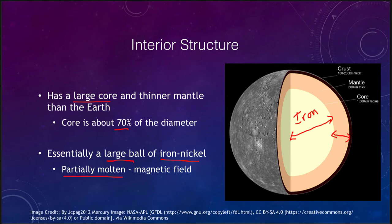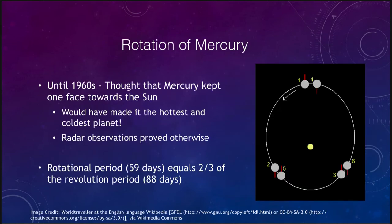Mercury does not rotate very quickly. Until the 1960s it was thought that Mercury might be simultaneously the hottest and the coldest planet — that it might be tidally locked to the Sun much as the Moon is tidally locked to the Earth. That would mean one side always faced the Sun and one side always faced away, making it simultaneously the hottest planet on the sunward side and the coldest planet in the solar system on the other side.